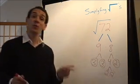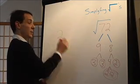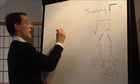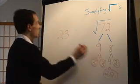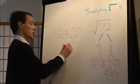Alright, we're pretty much done. We have to look for pairs of numbers. Here's a pair of 2s. So I'm going to take a 2 out. There's a pair of 3s. I'm going to take a 3 out. This 2 doesn't have a buddy, so he's got to stay inside. 2 times 3 is 6 root 2.